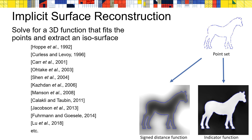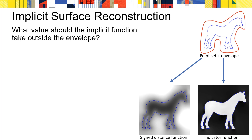In general, implicit surface reconstruction approaches fit either a signed distance function or an indicator function to the points. The signed distance function gives the distance from a point in 3D to the nearest point on the surface, with points in the interior assigned a negative value and points in the exterior assigned a positive value. The reconstructed surface is then the zero level set of this function. The indicator function is a smooth version with value 1 inside the surface and value 0 outside, and the reconstructed surface is then the 0.5 level set. A natural question to consider is which implicit function we should use if we want to support envelope constraints.